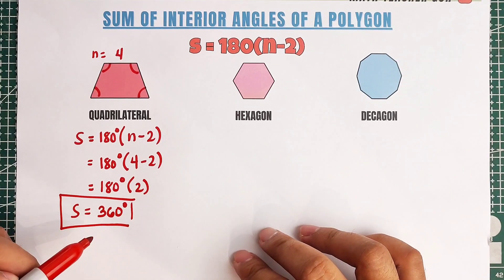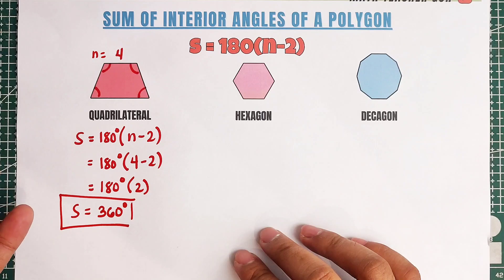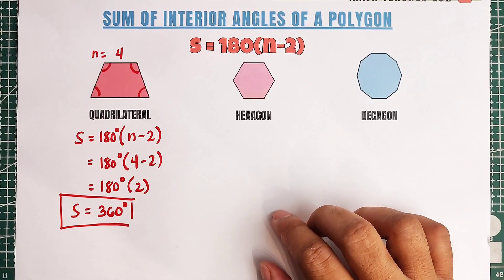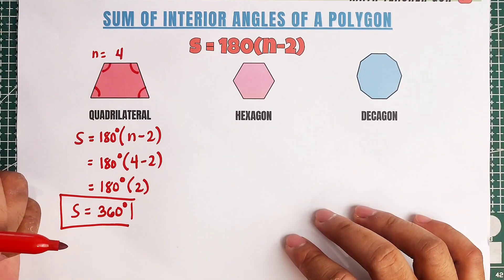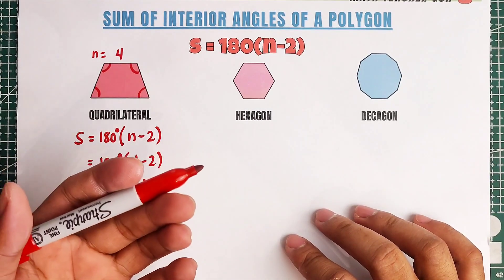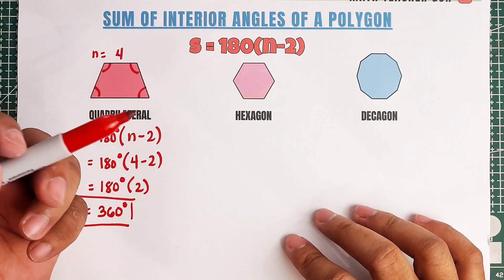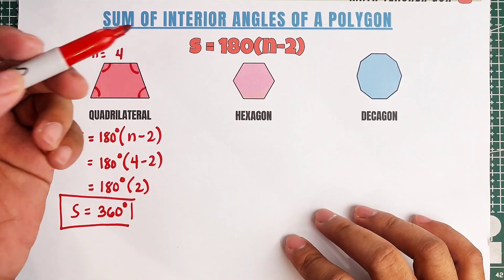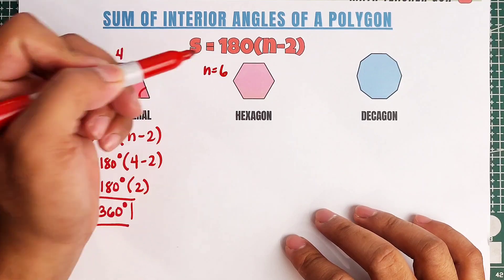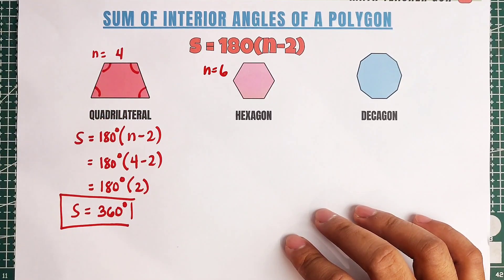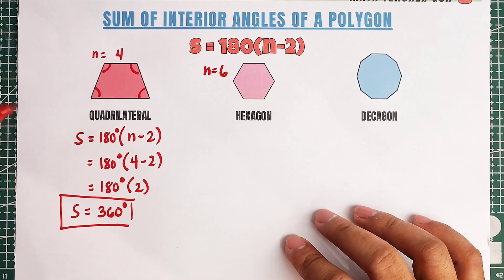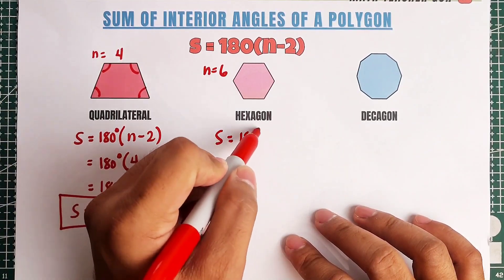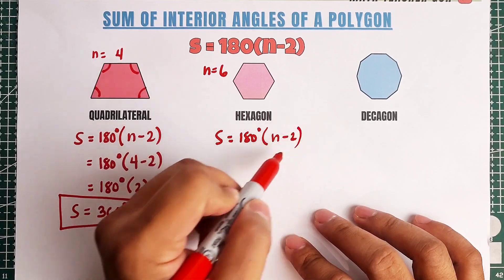360 degrees is the sum of the interior angles of a quadrilateral. Later on, we will put this in the given table from the start of the video. Let's continue with the hexagon. When we say hexagon, this is a polygon with six sides, meaning the value of N is equal to 6. Now we are ready to get the sum of the interior angles using the formula: S is equal to 180 degrees times N minus 2.